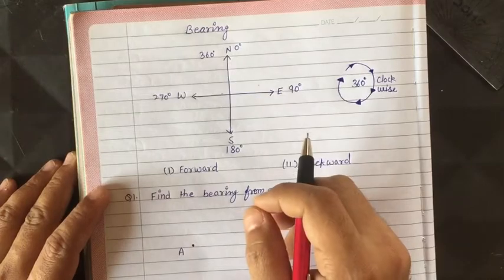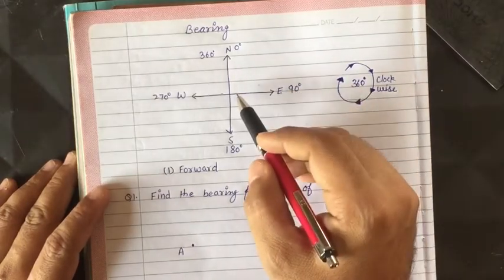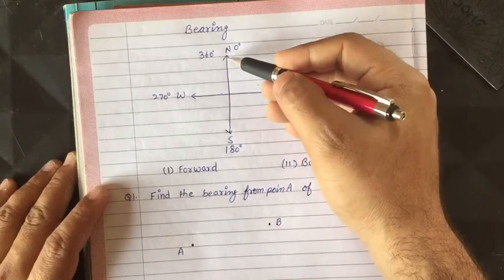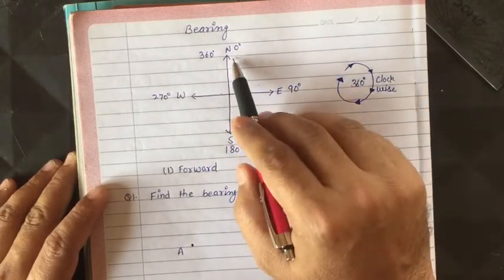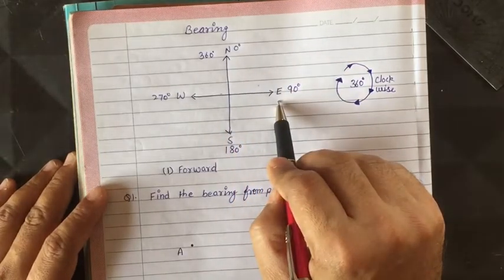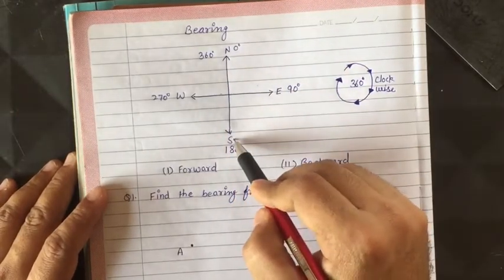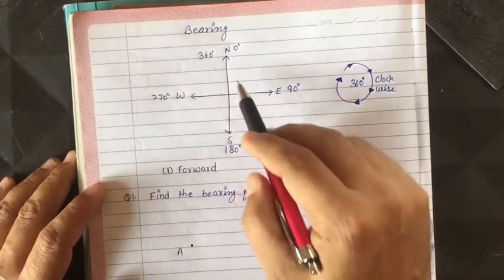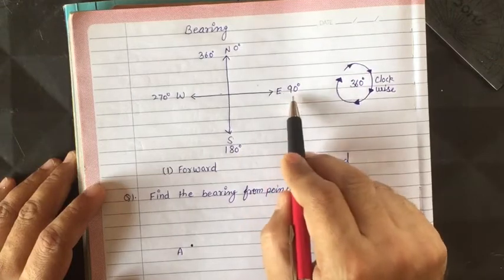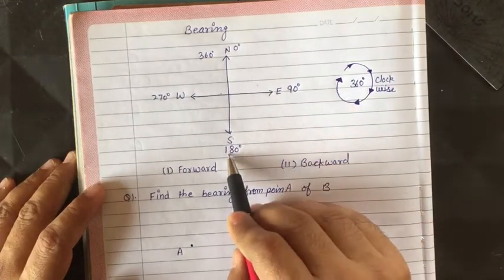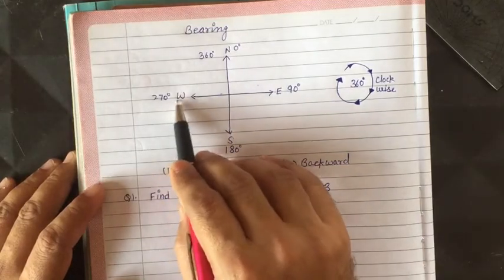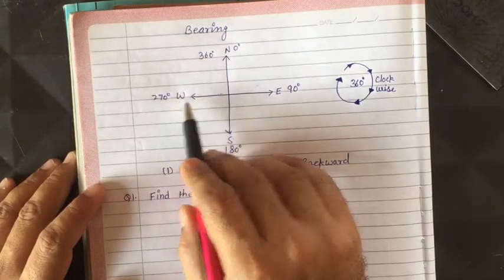Before understanding bearing, we need to understand a simple fact. Whenever we see any map, the top is always north, the right-hand side is east, the bottom is south, and the left-hand side is west. North is always at zero degrees, east at 90 degrees, south at 180 degrees, and west at 270 degrees.